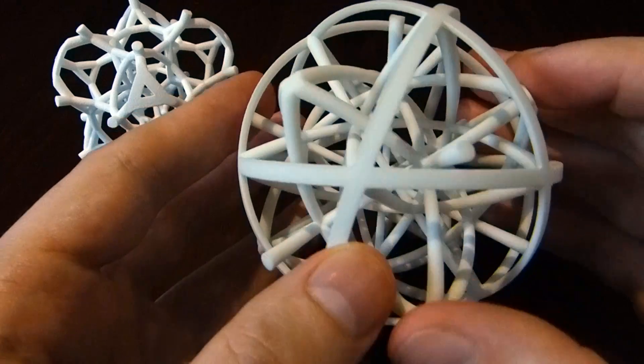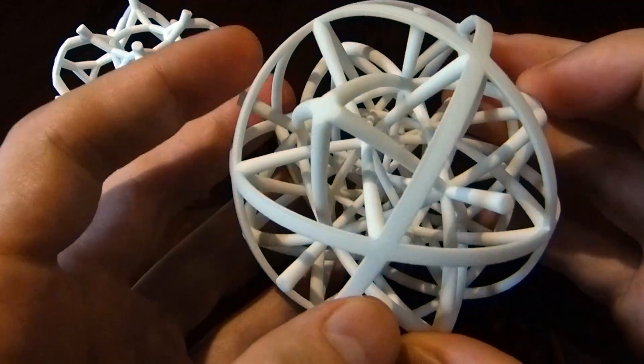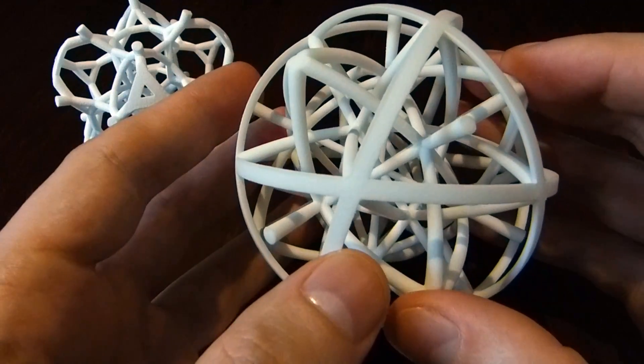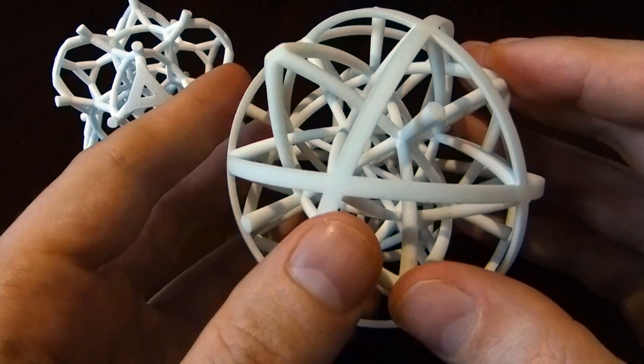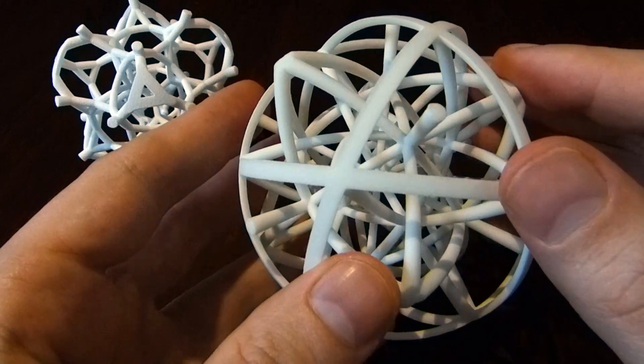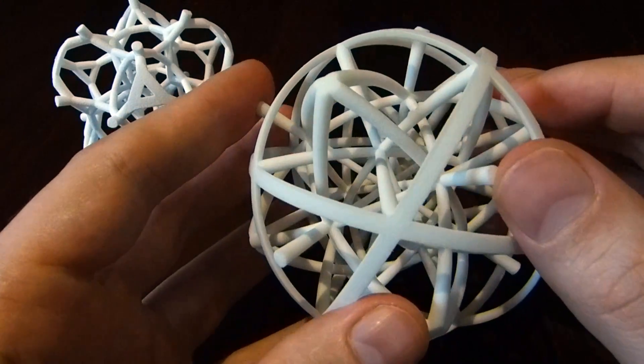So if you take any polytope, you can find the dual polytope, which is what you get when you replace all the vertices with cells. And in this case, for a four-dimensional polytope, vertices go to cells, edges go to faces, faces go to edges, and cells go to vertices.